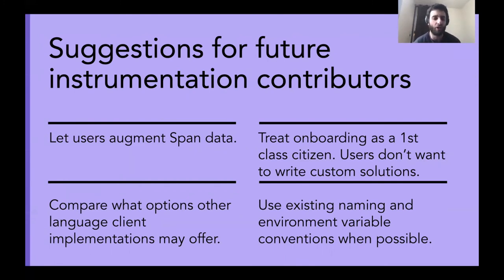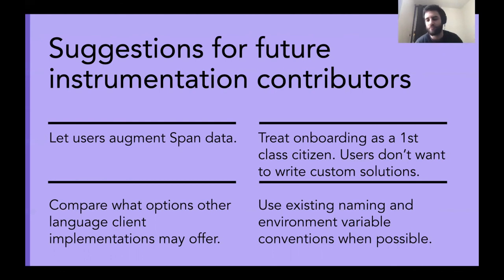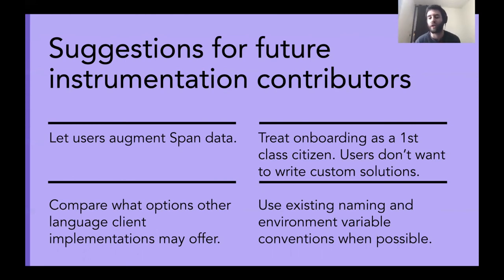When writing instrumentation, take a look at what other language client implementations may have done for similar libraries — it's important to borrow best practices from other languages when you can. Also look at existing naming conventions and environment variable conventions. We don't want to add to the cognitive overload of folks running multiple clients in multiple languages in their production systems. They want to remember specific names for config options and environment variable names, and be able to set those across all their languages when possible.